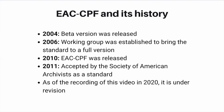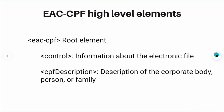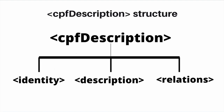The development of EAC-CPF benefited from many lessons learned through EAD development. Similarly, the revision of EAD to create EAD 3 benefited from the development of EAC-CPF. The two standards are highly complementary, and recent reconciliation efforts are striving to make that even more so. Like EAD, EAC-CPF has two sections: Control and CPF Description. Control includes information about the EAC-CPF document itself, and CPF Description includes the description of the corporate body, person, or family being described in the record.